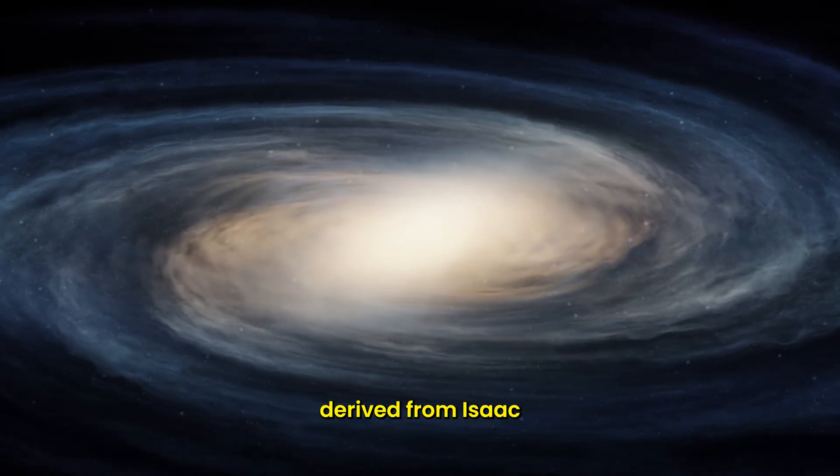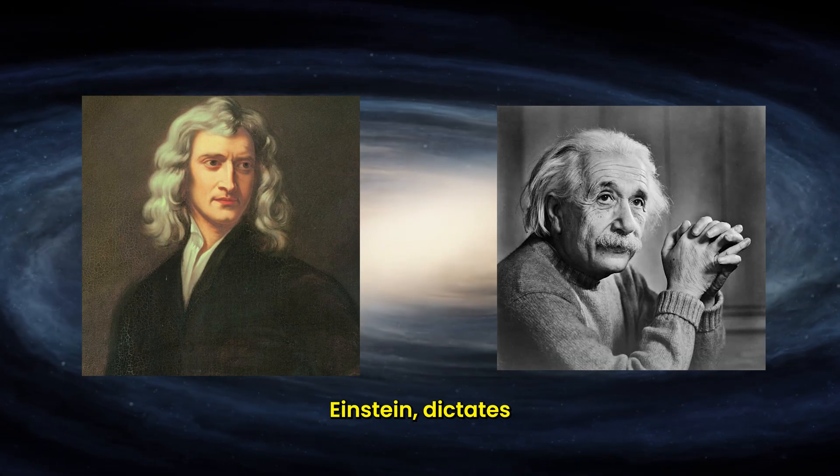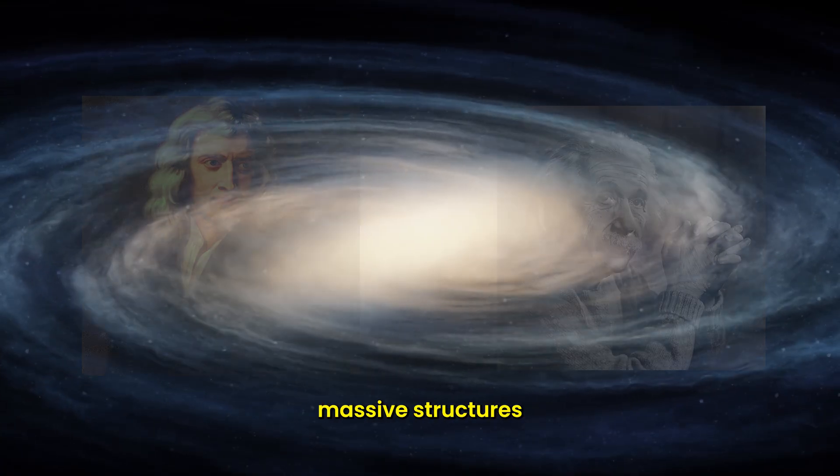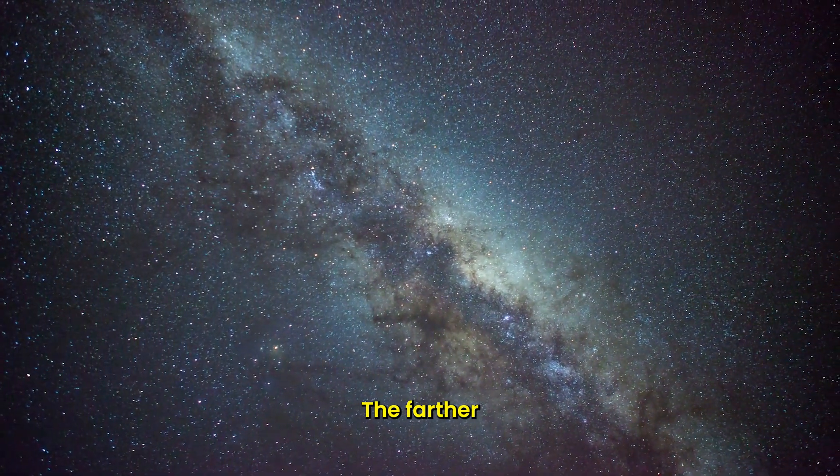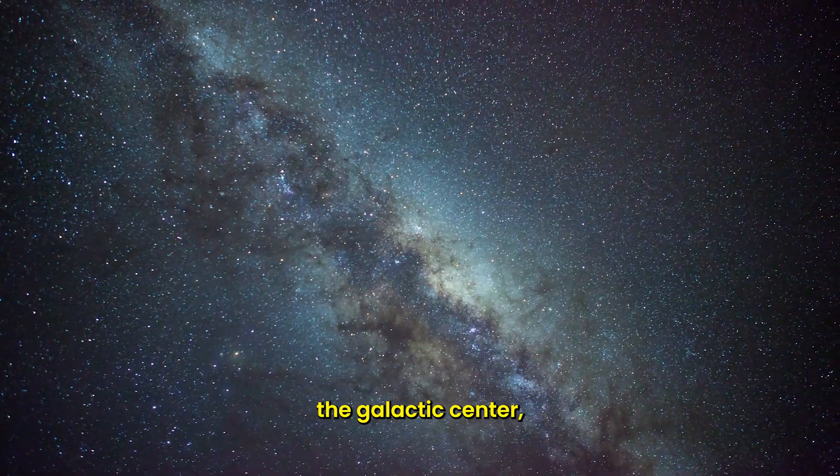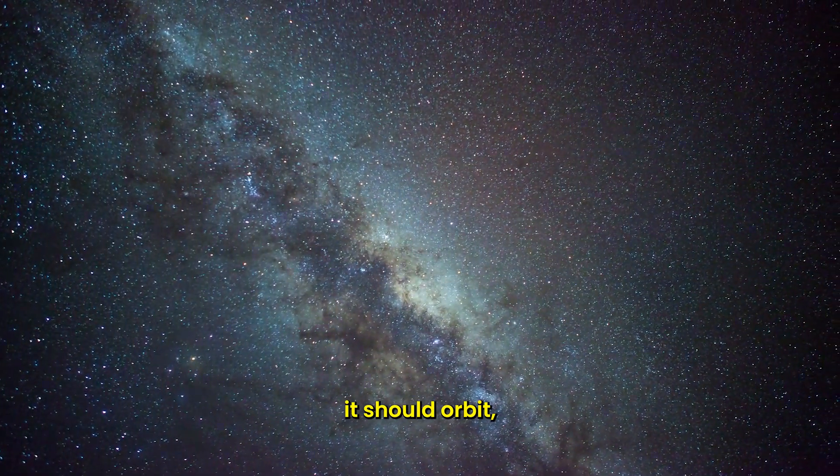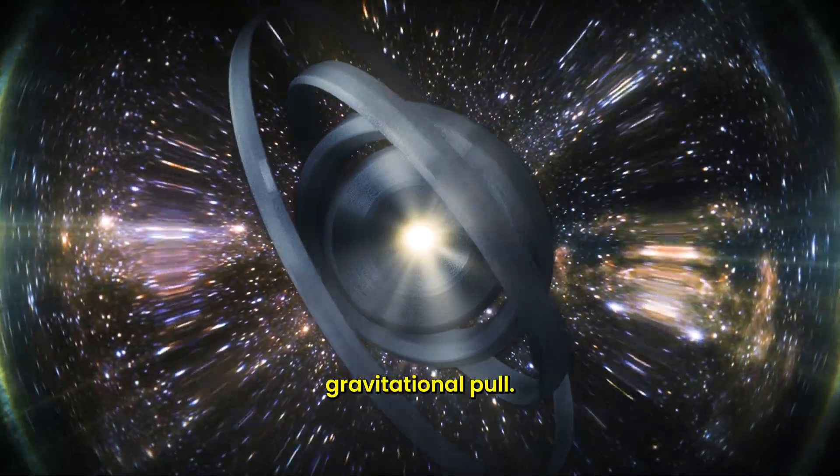Conventional wisdom, derived from Isaac Newton and Albert Einstein, dictates how these massive structures should behave. The farther a star is from the galactic center, the slower it should orbit, because it feels less of the galaxy's gravitational pull.